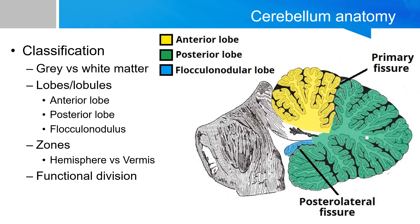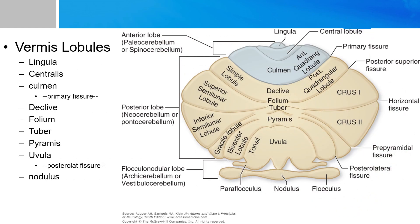The most obvious classification is by lobes. On a mid-sagittal view, as in this picture here, there are three anatomical lobes that can be distinguished in the cerebellum: the anterior lobe, the posterior lobe, and the flocculonodular lobe. These lobes are divided by two fissures — the primary fissure and the posterior lateral fissure. You can also subdivide the lobes into lobules, and there are nine lobules of the vermis.